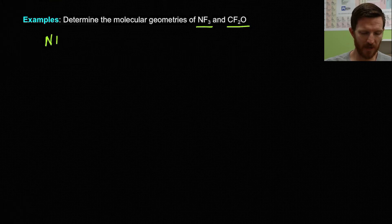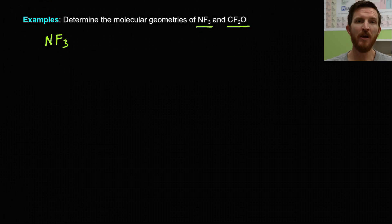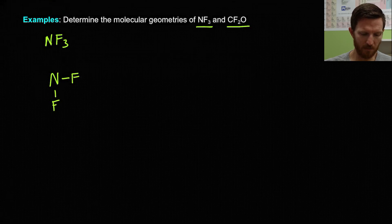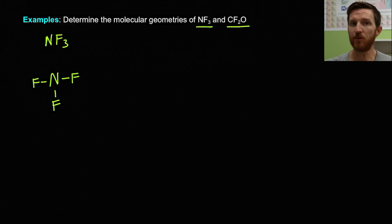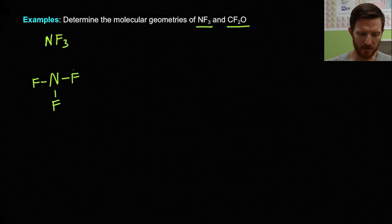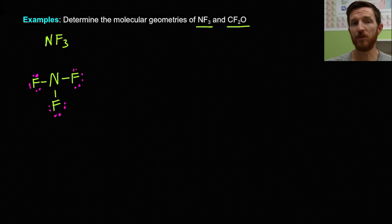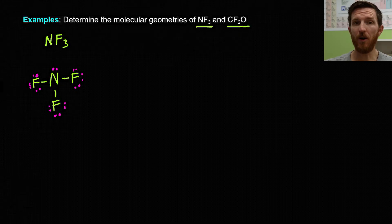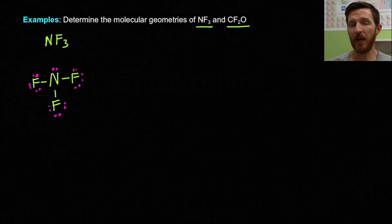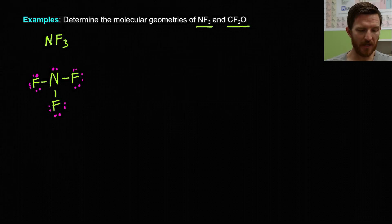For NF₃, we have a total of 26 electrons — 5 from nitrogen and 21 for the three fluorines. We draw the skeletal structure with nitrogen bonded to the three surrounding fluorines, then fill in the electrons giving all fluorines an octet with their lone pairs. We've placed 24 electrons for those three bonds and three sets of six electrons on the fluorine atoms. The remaining two electrons sit on the nitrogen atom, giving both nitrogen and all fluorine atoms octets, with formal charges of zero.